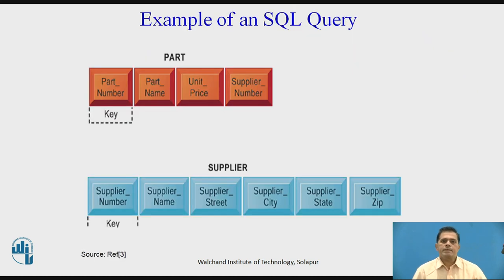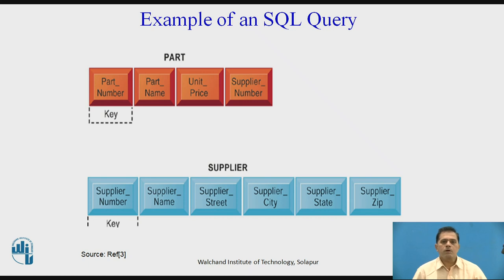Here we see an example of a structured query language — that is, an SQL query. There are two relations: one is 'part' and another is 'supplier.' Here, relation means table, and in SQL language we refer to it as a relation. These two relations are required for retrieving data from the database.